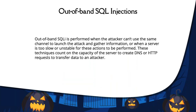Last but not least, we have out-of-band SQL injection. This is performed when there is no direct channel to launch the attack, or the database is too slow or unstable for inferential or blind SQL injection. These kinds of SQL injections mostly depend on the capacity of the server to create DNS or HTTP requests to transfer data to an attacker.